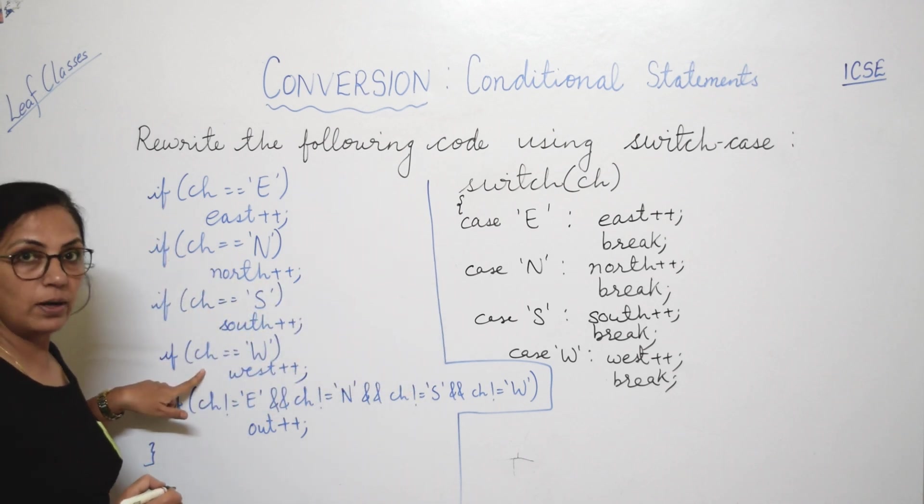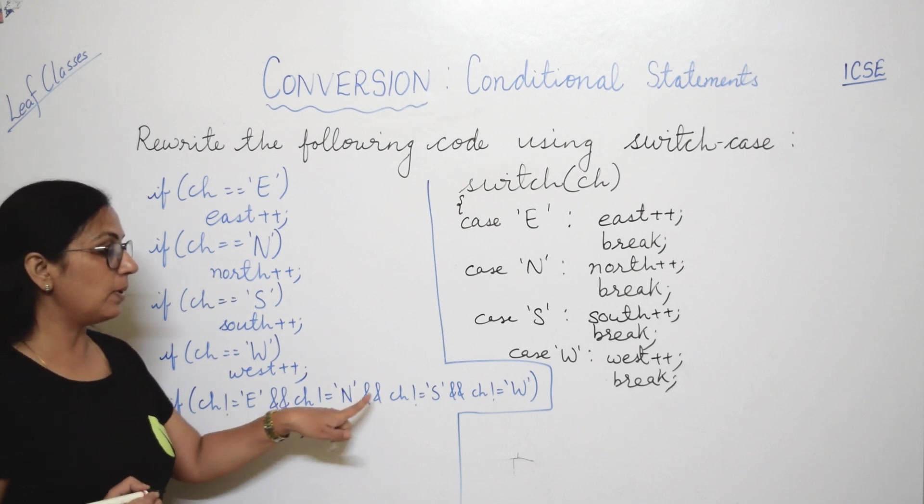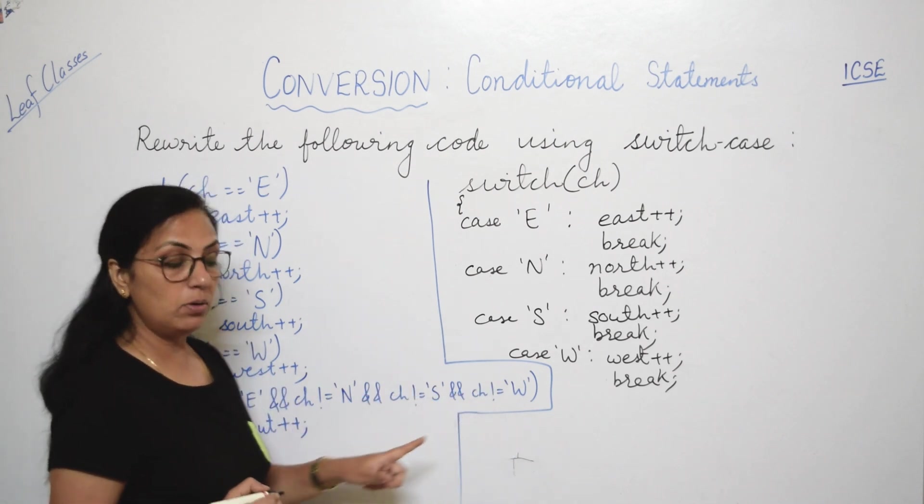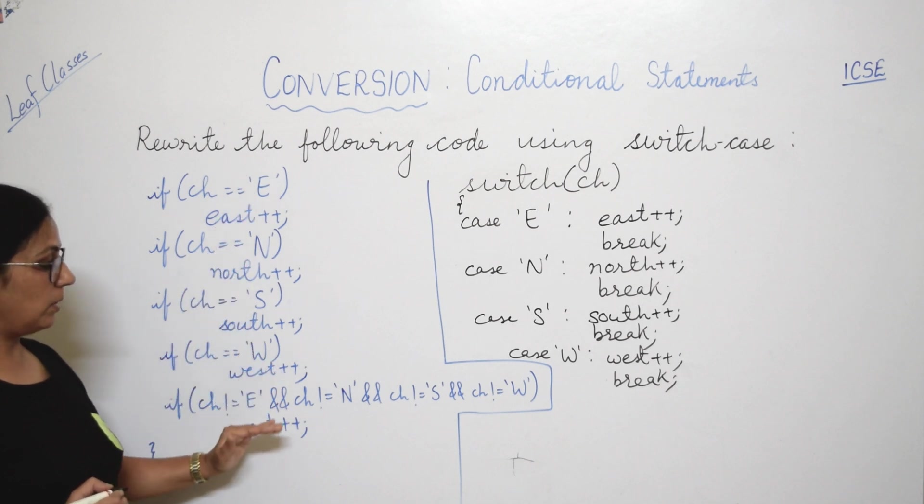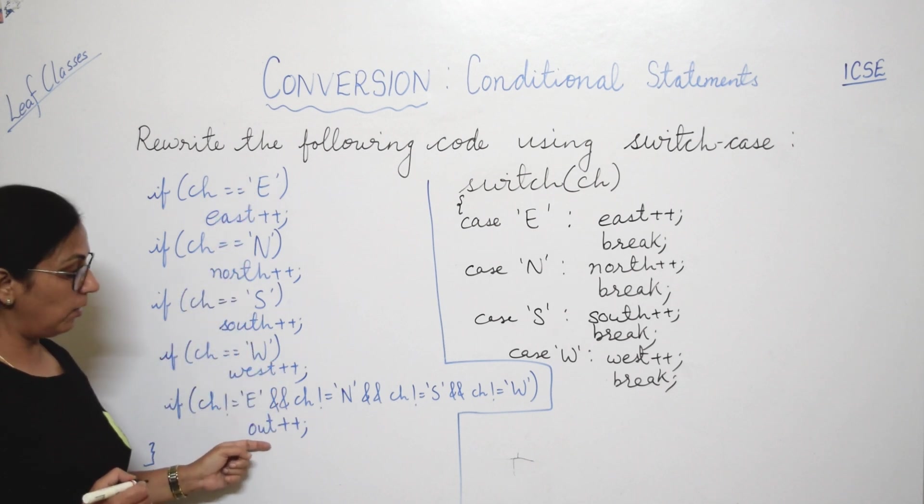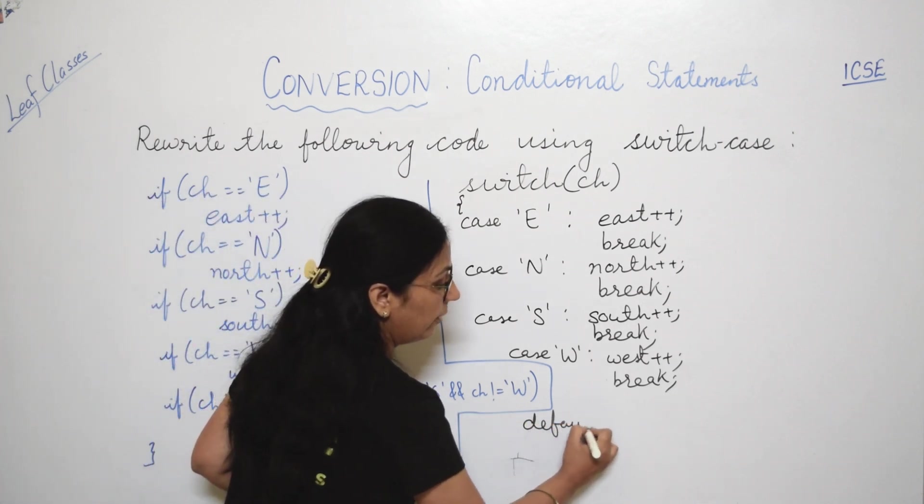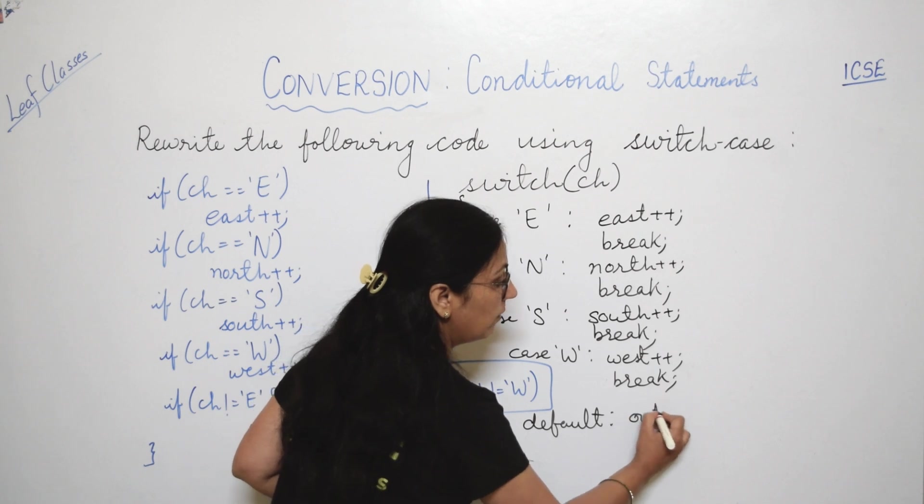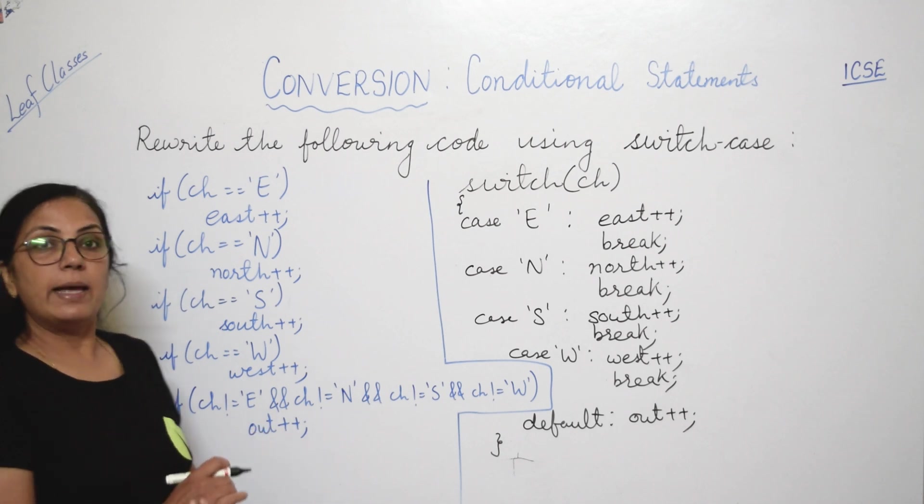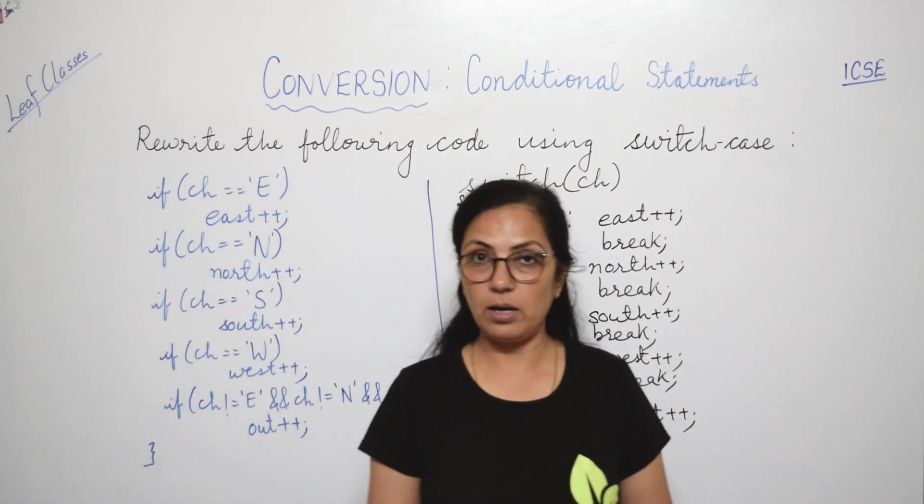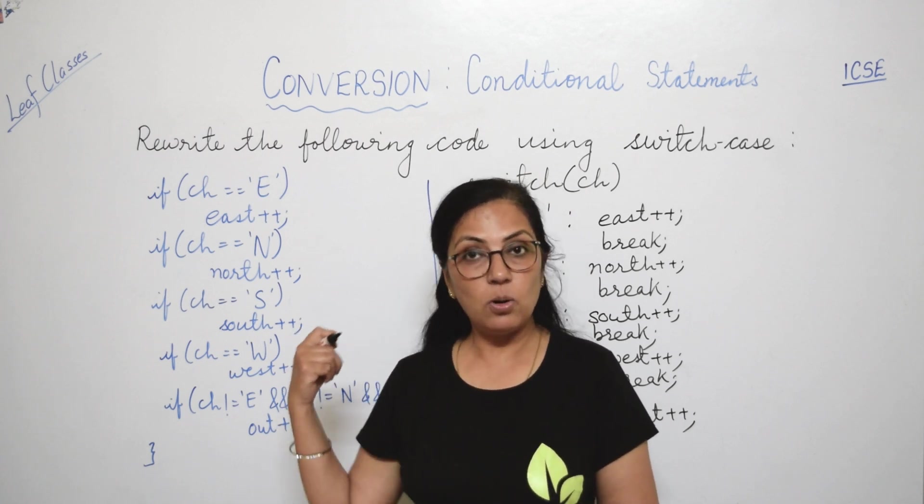For this you have west plus plus and break statement. Now ye toh 4 cases ho gaye when 1, 2, 3, 4, these 4 if statements are there. Last if dekho kya: if this is ch is not equals to E and not equals to N and not equals to S and not equals to W, then out plus plus. Ye humko karna hai. That means agar is mein se koi bhi condition true nahi hai, toh we have to increment the value of the variable out by 1. So woh hum kisme likhenge? Default mein. If none of the matching case is found, we will write the statement in default, and then you close the switch block, right children? So like this you will get a question in your exam to convert one type of conditional statement to another type, and I hope this is clear.